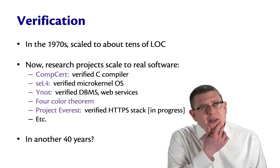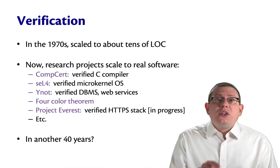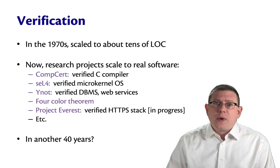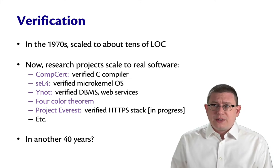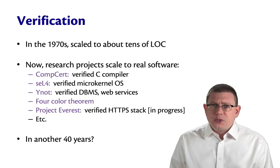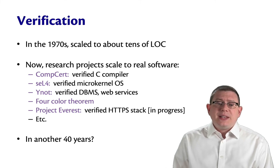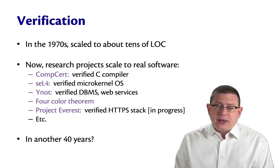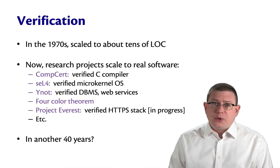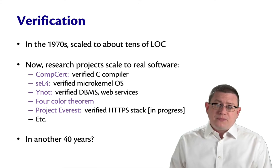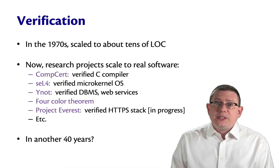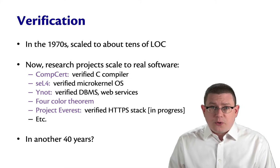Now, you might be thinking: how could it have bugs if we proved it correct? It's because not the entire part of the compiler was proved correct — there were some pieces in the parser that weren't originally proved correct, though they've gone ahead and done those as well. Other examples include SEL4, which is a verified microkernel OS, which provided a library on top of which was built a verified database management system. That was done in part by our very own Professor Greg Morissette, who is now the Dean and Vice Provost of Cornell Tech.